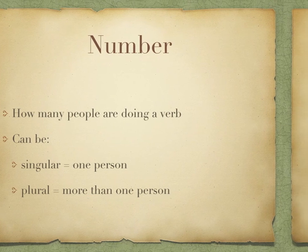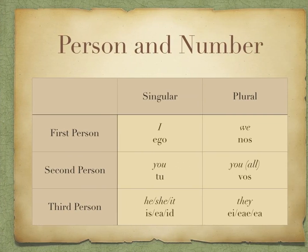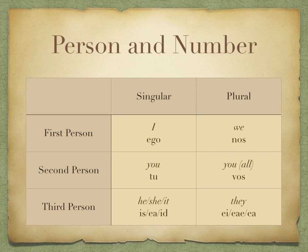When we combine person and number together, we have six different possible endings that a verb can have. First person singular is 'I', and plural is 'we'. In Latin, these words are ego and nos. Second person singular and plural — in English we'd say 'you' for either of them, although in Latin they've got two different words: tu for you being one person, and vos for you being more than one person.